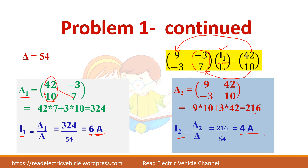It is very simple. Whenever you get 2 or 3 equations, always prefer Cramer's Rule — it is very easy. And if you know how to use a calculator, you can directly find the determinant value using the calculator as well.